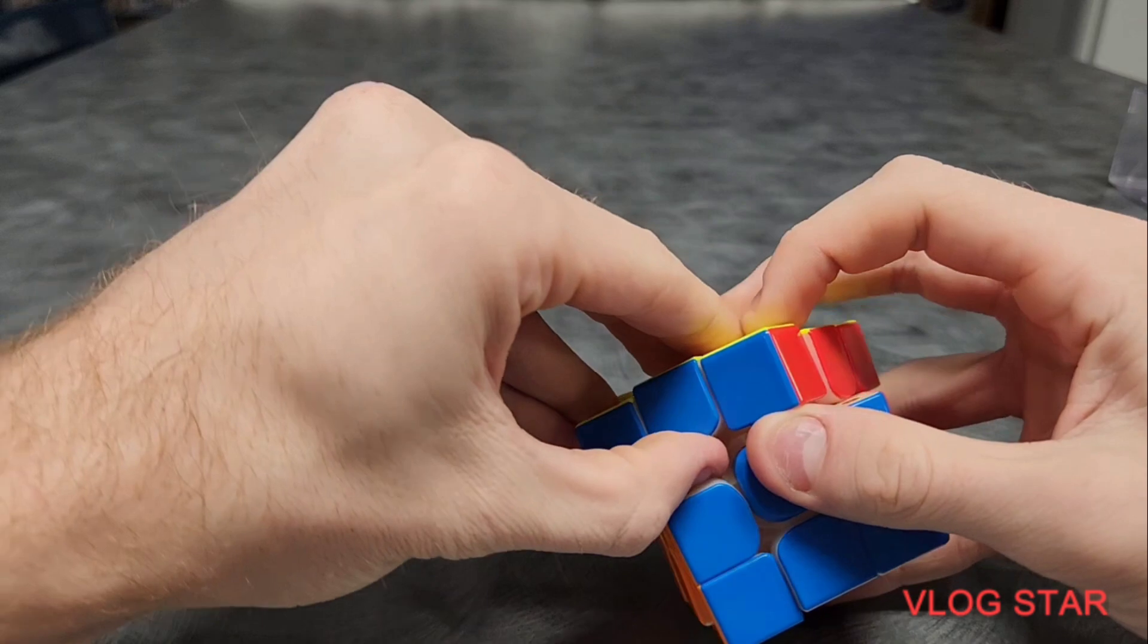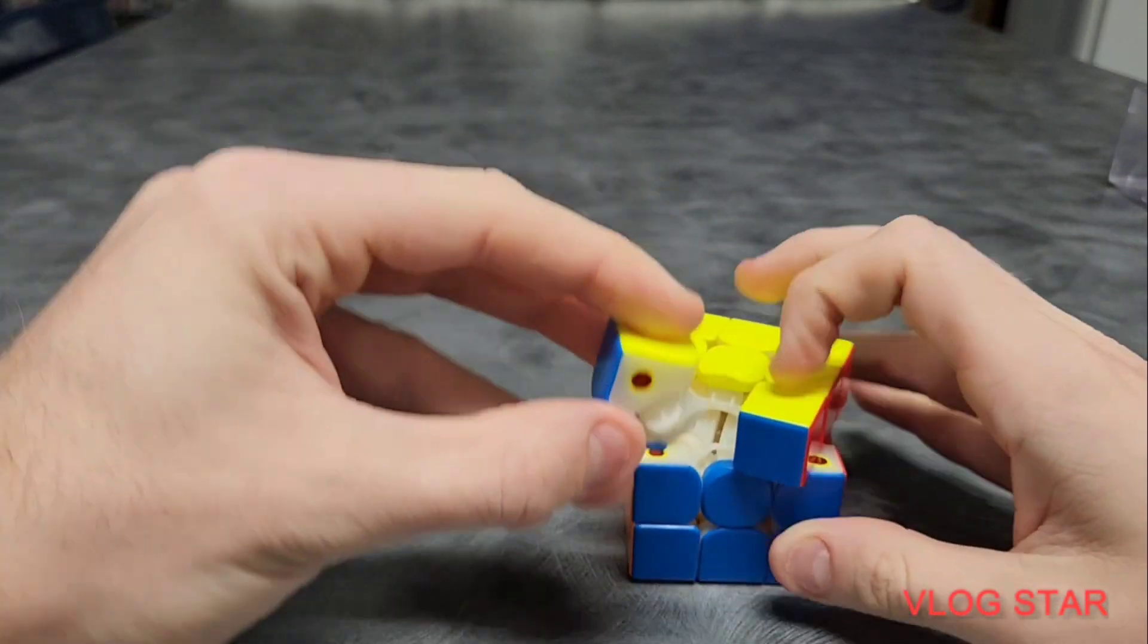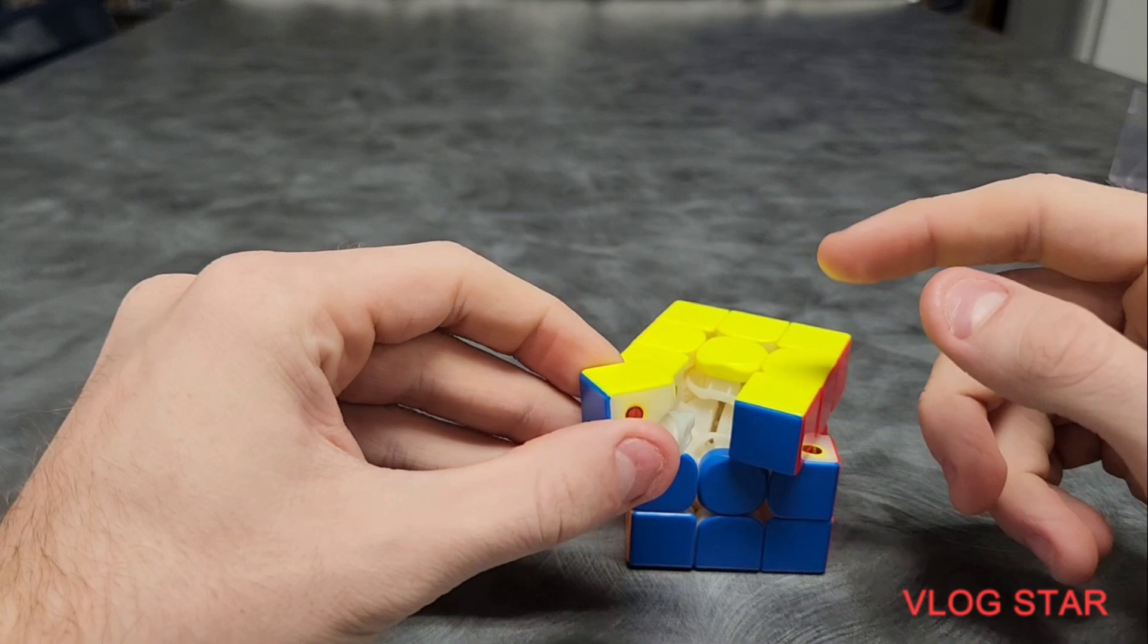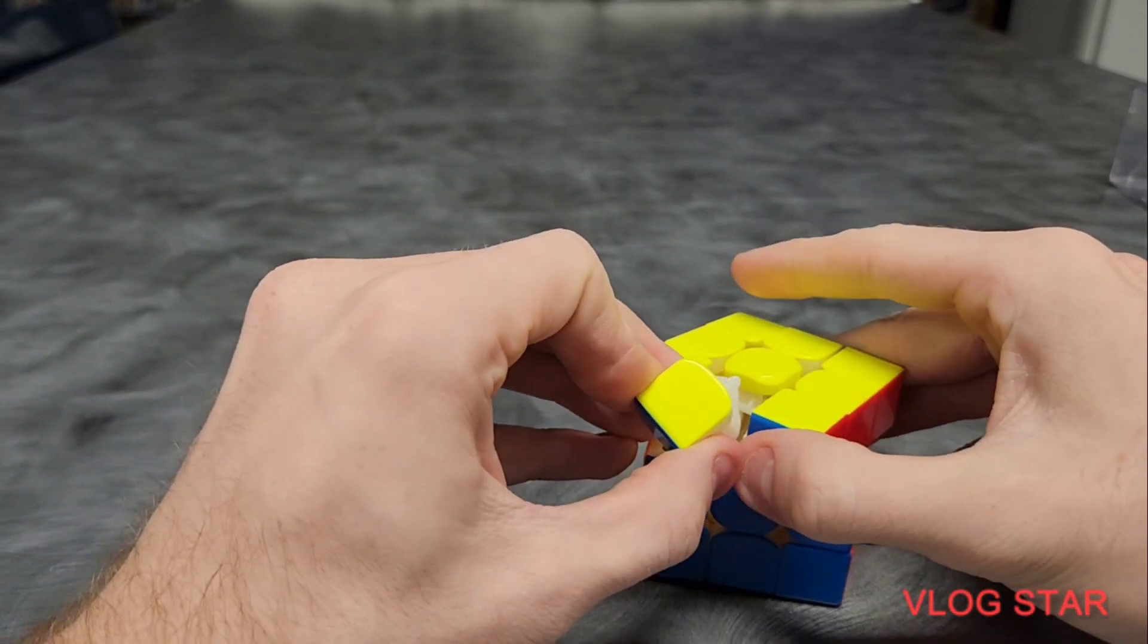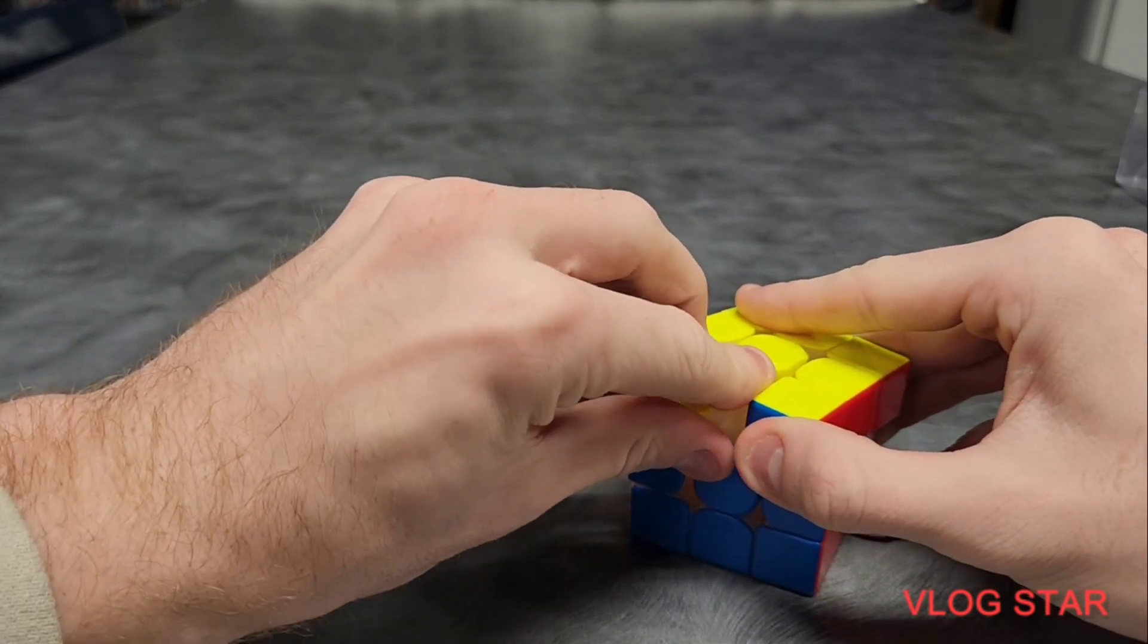Also remember that you're not going to solve the cube looking at it trying to move each individual color. Each little cube is made up of multiple colors, and you need to put the cubes in their right spot respective to the colors they have.